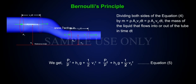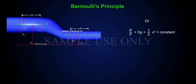We get P1 by rho plus H1G plus 1 by 2V1 square is equal to P2 by rho plus H2G plus 1 by 2V2 square, equation 5, or P by rho plus H2G plus 1 by 2V square is equal to constant.